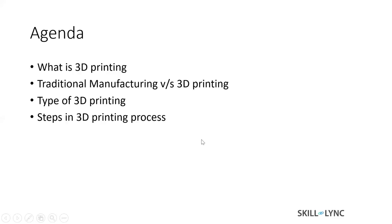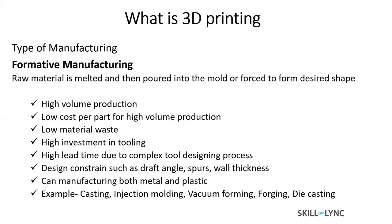So before we discuss what 3D printing is, let's discuss typical manufacturing methods. One of the manufacturing methods is formative manufacturing, in which you have a raw material, you melt the raw material, then you pour that raw material into a mold, either directly or using some force to get your desired shape.